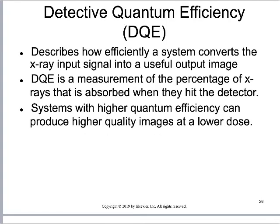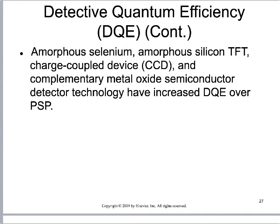Ways to improve exposure latitude include increasing bit depth, but they also involve the actual hardware used to acquire images. Detective quantum efficiency (DQE) refers to how efficient the image receptor is at taking an x-ray photon and turning it into a signal the computer can process. DQE is a measurement of the percentage of x-rays absorbed when they hit the detector. A system with higher DQE can produce a higher quality image at a lower patient dose. This is one major reason we've moved from photostimulable phosphor technology to flat plate technology — flat plate has a higher DQE. Amorphous selenium, amorphous silicon, thin film transistors, and charge-coupled devices all have an increased DQE over photostimulable phosphor systems.